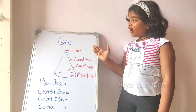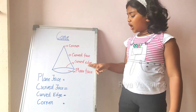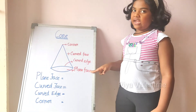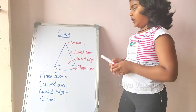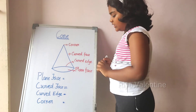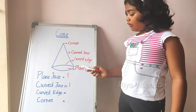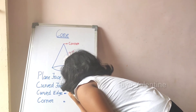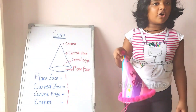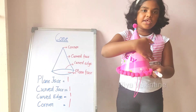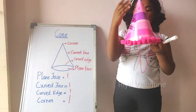So let's move on to the cone. The cone has one corner, one curved face, one curved edge, and one plane face. One plane face. And how many curved faces? One. How many curved edges? One curved edge. How many corners? One corner. An example for a cone is a birthday hat. This is the curved face, this is the plane face, and one corner and one curved edge.